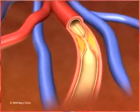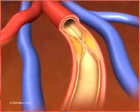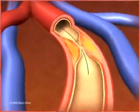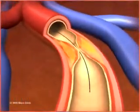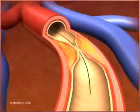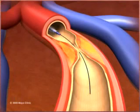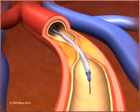A thin, flexible metal wire is then advanced through this tube and past the site of blockage in the artery. A second, smaller catheter is then inserted over the wire and threaded to the same artery.